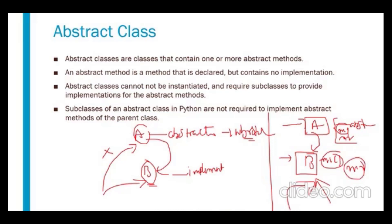Now both M1 (implemented in B) and M2 (implemented in C) are done. Since C inherits M1 from B and implements M2 itself, we can create an object for C. Let me show this practically in PyCharm.